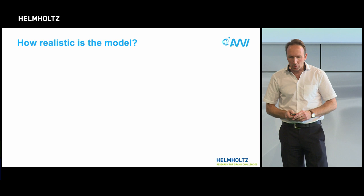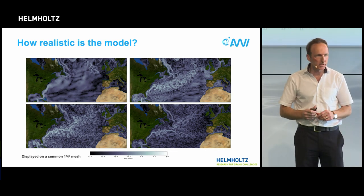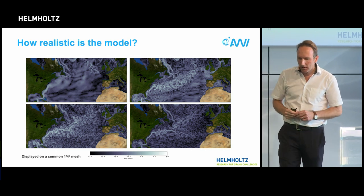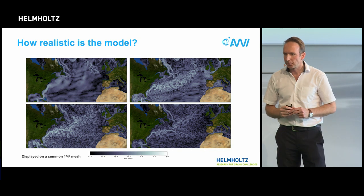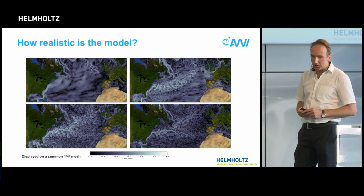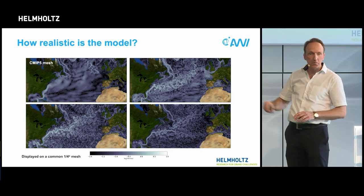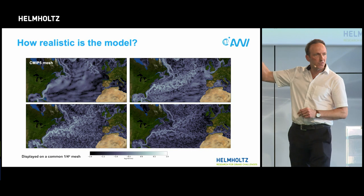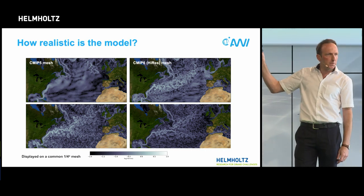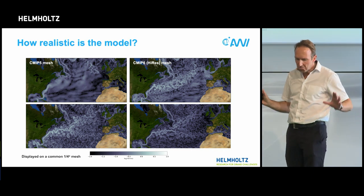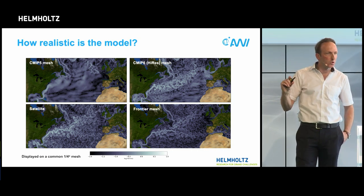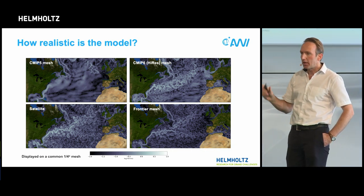How realistic is the model? I would like to play a little game with you. What you see here are ocean currents at the surface — the lighter, the faster the current. There are three simulations and one satellite product. Can you spot the satellite? It is fairly straightforward to discard the upper one — there's nothing like the Gulf Stream. That's how the world looks in a typical CMIP5 model, the model used as input for the latest assessment report. The satellite product is an altimeter. And that's what we call frontier meshes — the frontier of science — where things become very similar and very realistic.